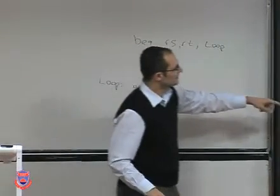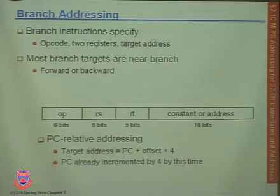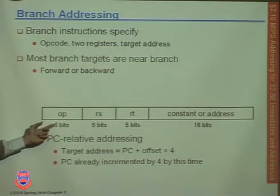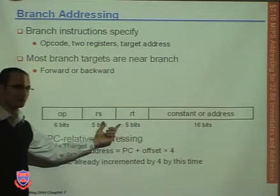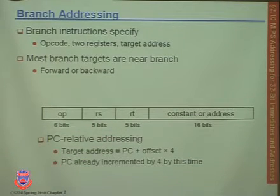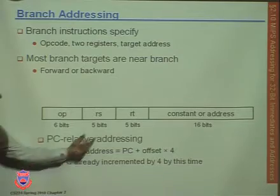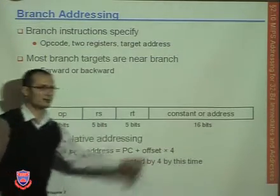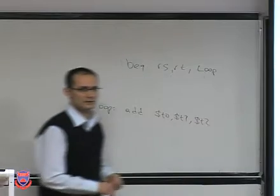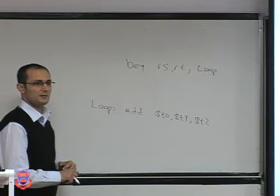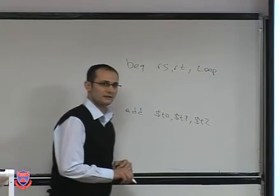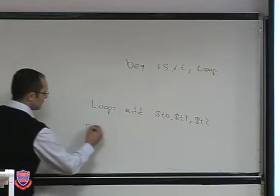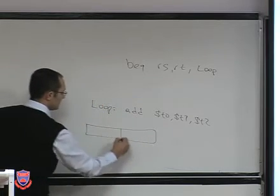When you look at the instruction format of such a branch instruction, you have the opcode which is composed of 6 bits, and then you represent the two registers using 5 bits each — so if it is register 2 you will have 5 bits representing the number 2, and so on. And then you have the constant or immediate which is 16 bits. The 16 bits that we use is actually the offset. This is the 16-bit offset in the instruction format.